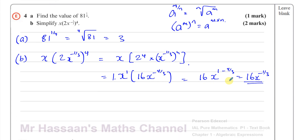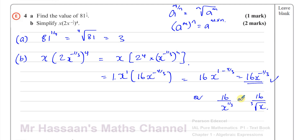You can leave your answer as 16x to the power of minus one third. Or you could write it as 16 over x to the power of one third. Or if you want, you can say 16 over the cube root of x. All of these are perfectly correct answers for this question. There are three different ways you can express your answer for part B.